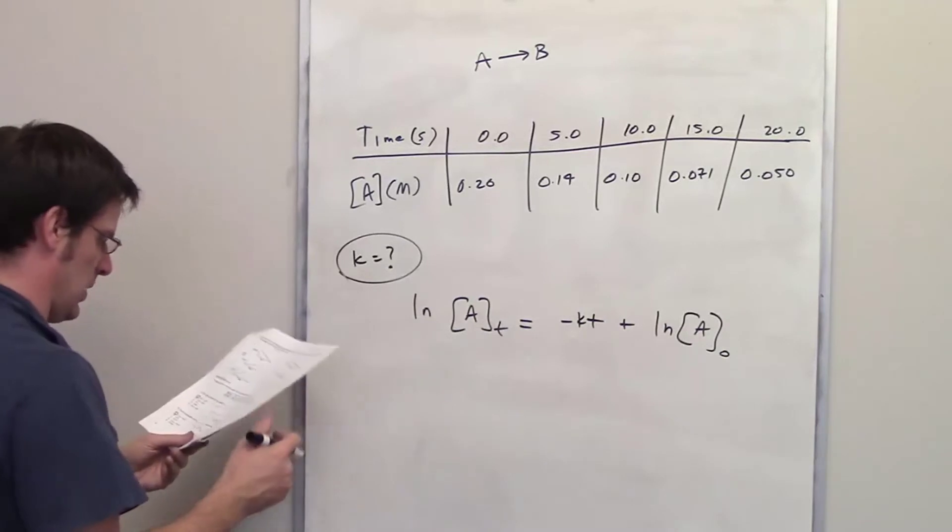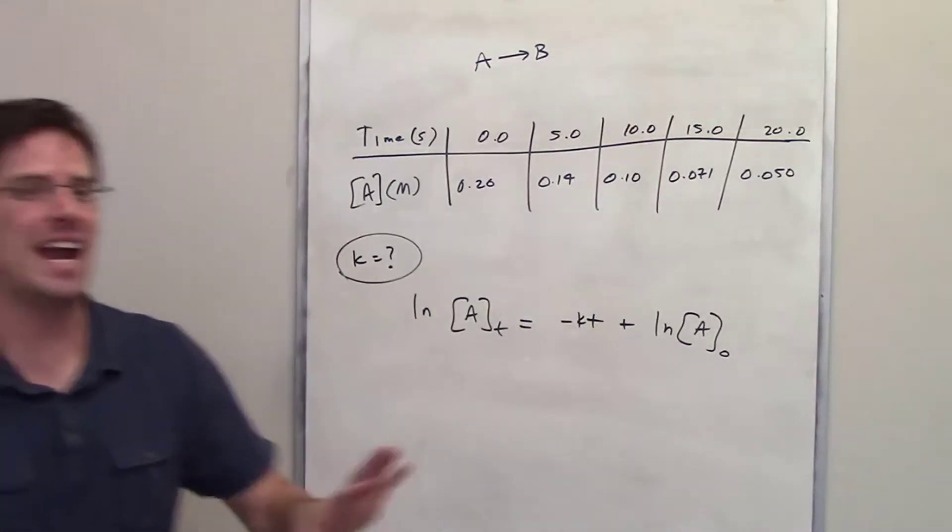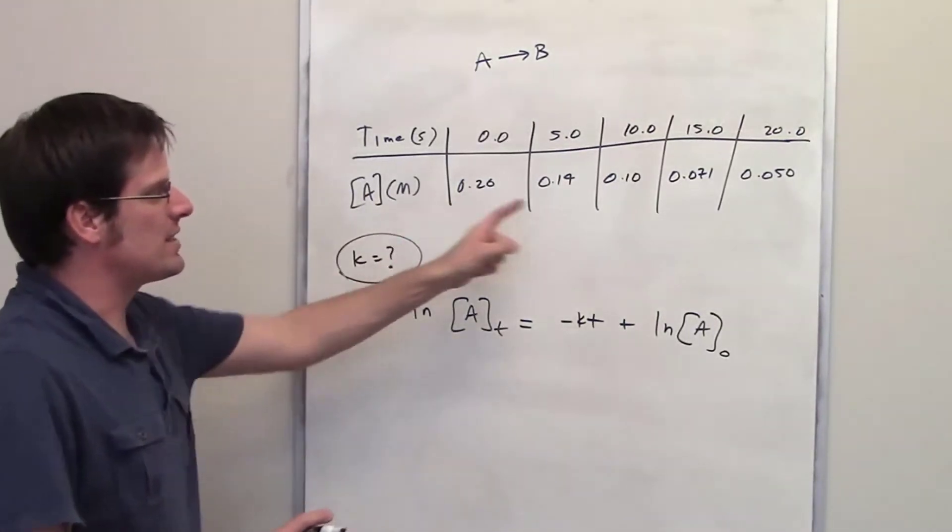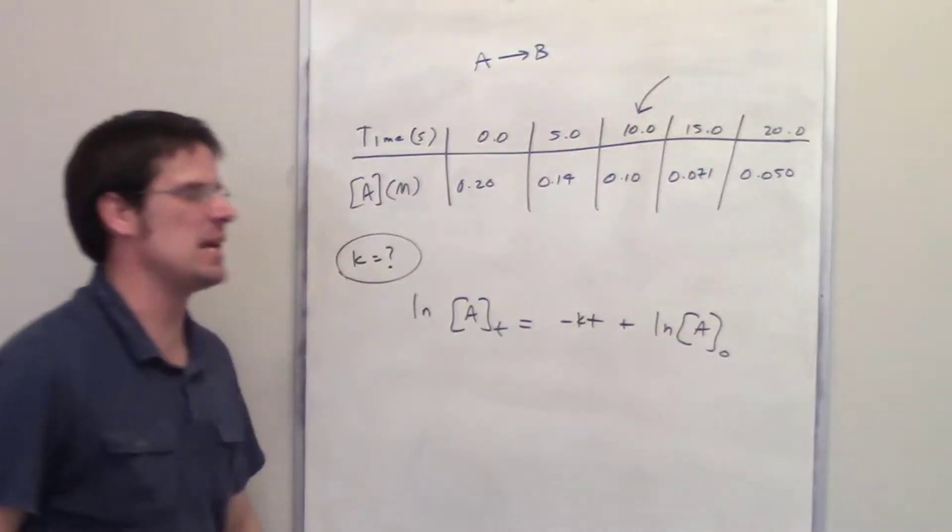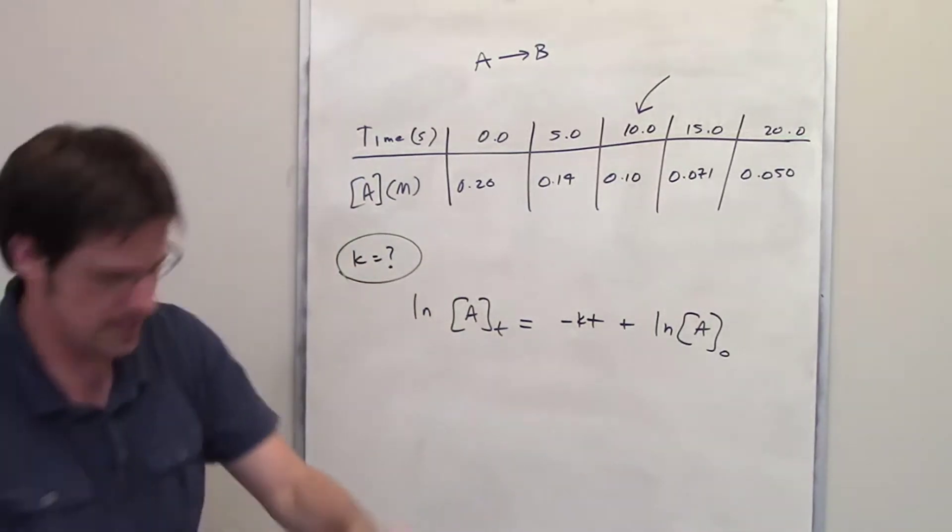Well, in order to determine what k is, what I can do is I can take this data and throw in the numbers for any time t, and it should work. It honestly doesn't matter which of these times t you pick, you should get the same answer. I'm going to go ahead and pick t equals 10, but you can pick a different one and see if it gives you the same answer. Hopefully it actually does.